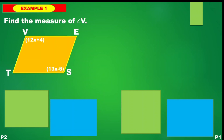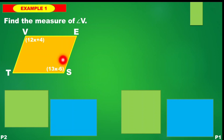Let's now move on to examples. Find the measure of angle V in parallelogram VEST. We have the given that the measure of angle V is 12x + 4, while the measure of angle S is 13x − 6. These two angles are opposite angles. So the property we apply here is property number 2.